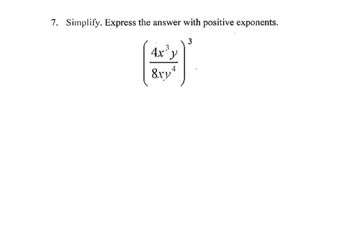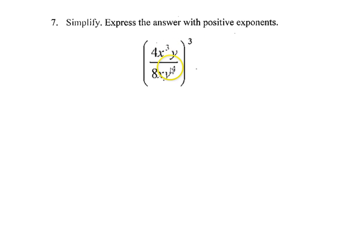Number 7, we're going to simplify the answer with positive exponents. So we have 4x to the third times y over 8x, y to the fourth, that whole thing to the third power. So what I'm going to do is take every single base in the fraction and put that to the third power. So I'm going to do 4 to the third power, x to the third to the third power, y to the third power in the numerator, 8 to the third power, x to the third power, and y to the fourth to the third power. So we have a lot of powers of powers property going on here.